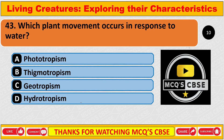Which plant movement occurs in response to water? The correct answer is D: Hydrotropism.